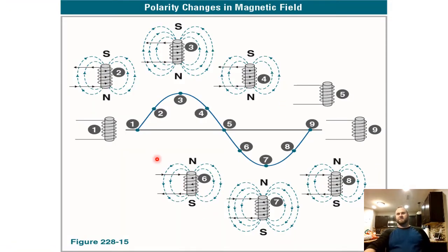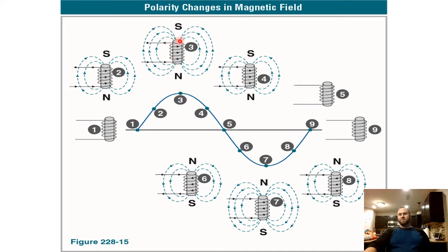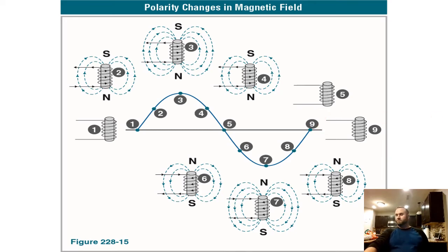As you can see here, here's an example of polarity changes in a magnetic field. When the magnet is in position one, there is no magnetic field. As current starts to pass through it, the magnetic field starts to increase — north here, south here. As the sine wave comes to a peak, the magnet is at its strongest. When it reaches position five it's at its weakest; at position seven it's at its strongest in the opposite direction — north and south are now reversed. This alternation happens 60 times per second.